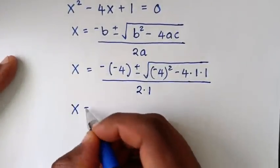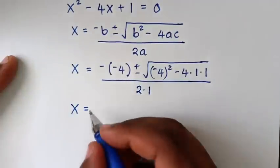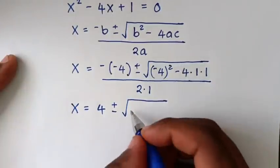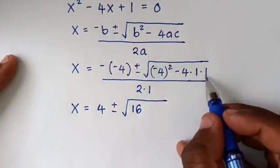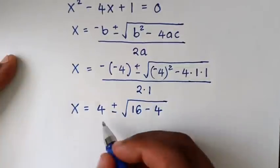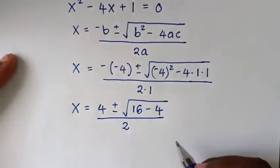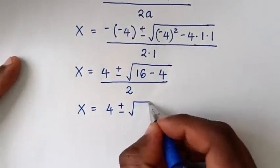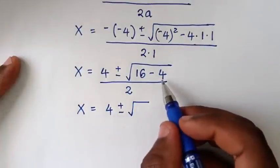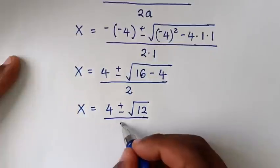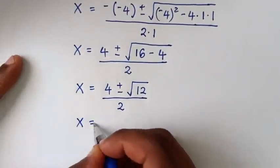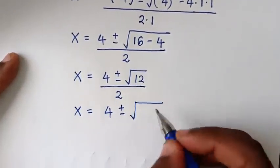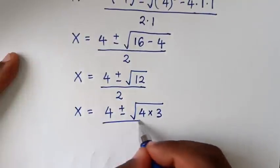This gives x = (4 ± √(16 − 4)) / 2, which simplifies to x = (4 ± √12) / 2. Since √12 = √(4·3) = 2√3, we have x = (4 ± 2√3) / 2.